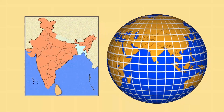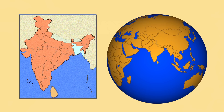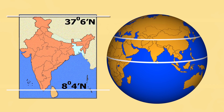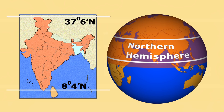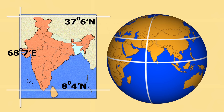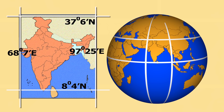India lies between 8 degrees 4 minutes north and 37 degrees 6 minutes north latitude. We use the word 'north latitude' in both cases because entire India lies in the northern hemisphere. Similarly, the longitudinal extents are 68 degrees 7 minutes east to 97 degrees 25 minutes east, because India entirely lies in the eastern hemisphere.